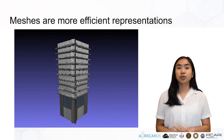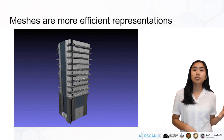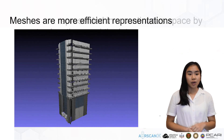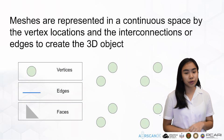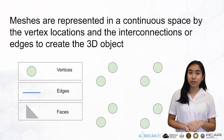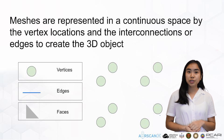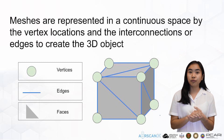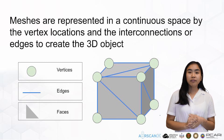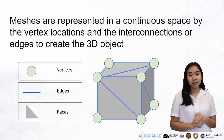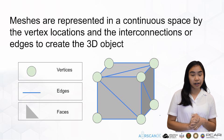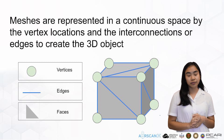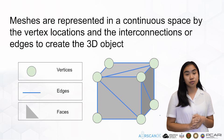Meshes are represented in a continuous space by the vertex locations and interconnections or edges to create a 3D object. When given only eight vertices of a cube, it is very hard to see the underlying object. The cube is better depicted once the edges and then the faces are in place to form the solid object. Even with sparse points, an object can be fully represented as long as there are necessary faces. For this reason, we'd like to focus on reconstructing surfaces from sparse point clouds to form meshes.